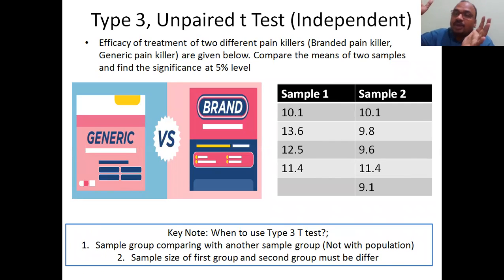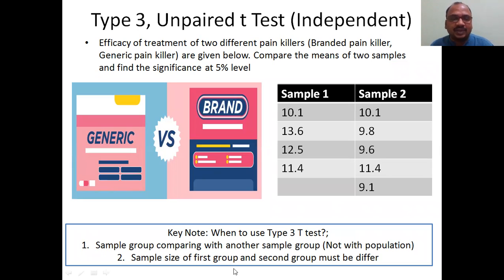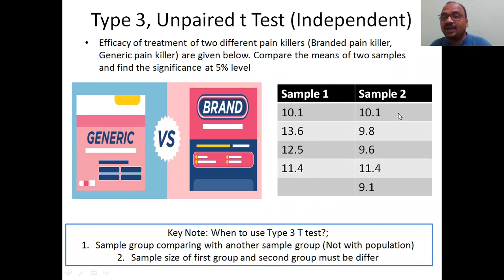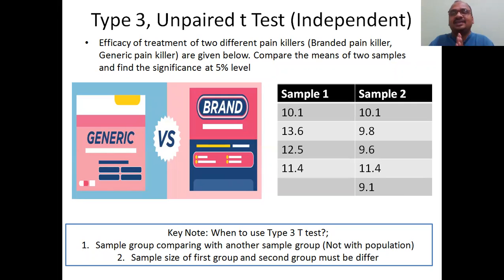Also, the sample sizes of the first group and the second group must be different. See here — the first group has 1, 2, 3, 4 values and the second group has 1, 2, 3, 4, 5 values. They are not equal. That is why you choose Type 3.